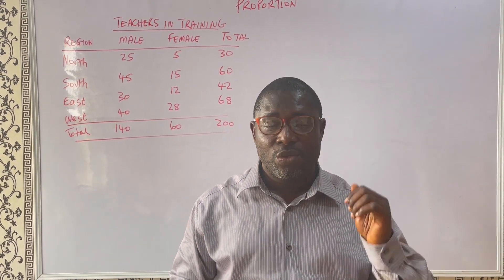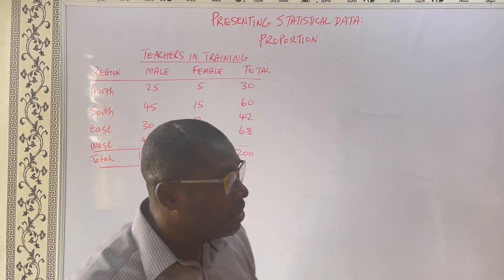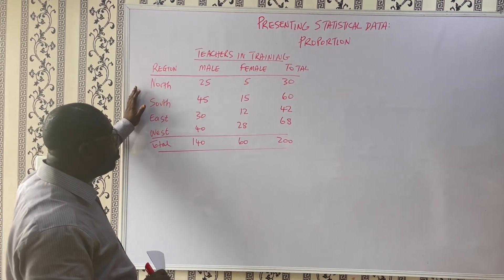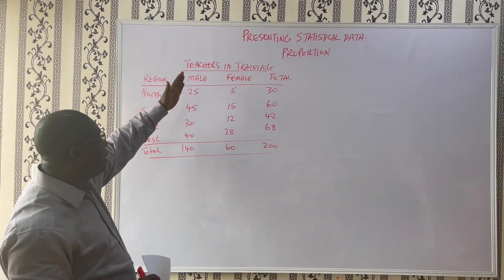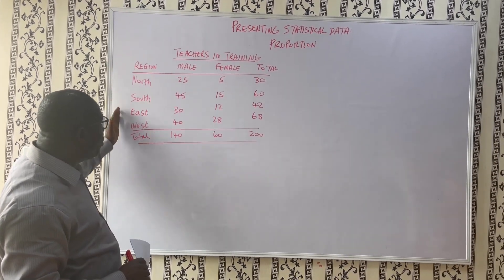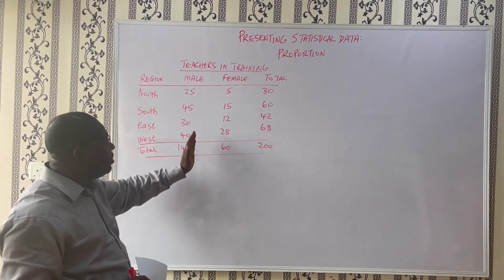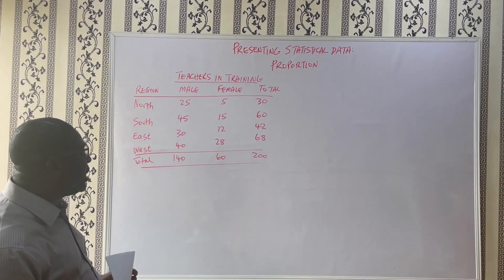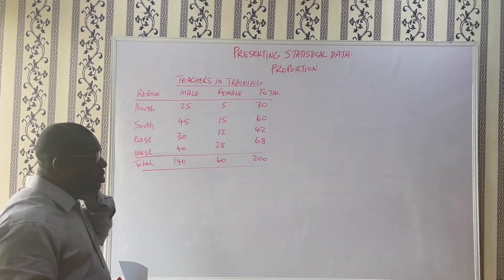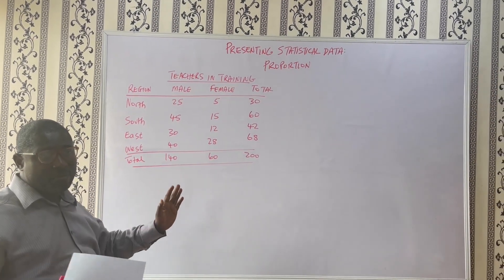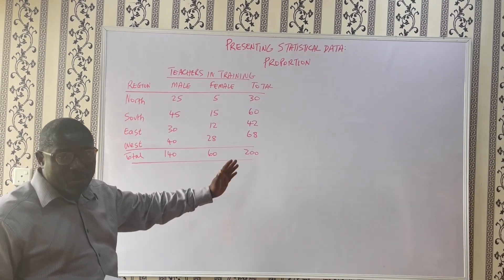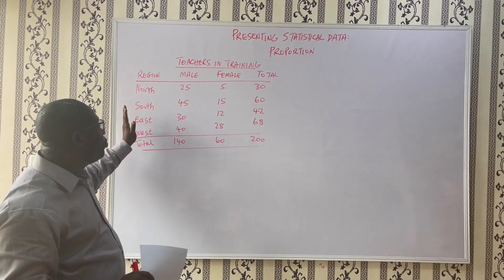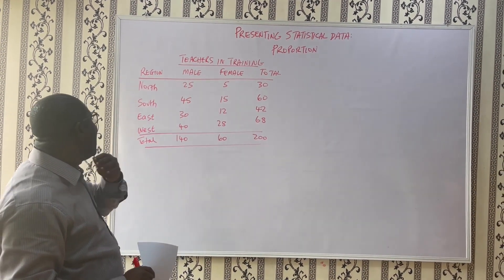From our board, I want you to follow me. We're going to look at this table. This is a table given to us where we have teachers in training. We have religion, we have male, female and then the total value. There are different aspects of proportion to look at. Proportion is quite vast, so from this table below, we have a lot of comparisons to make as to looking at parts to the whole.